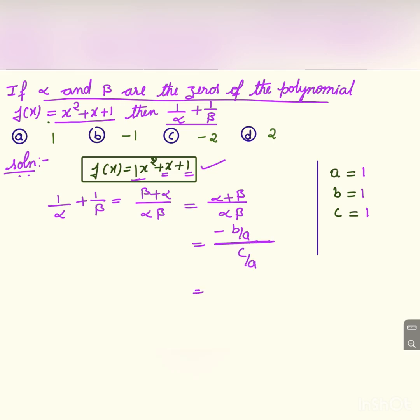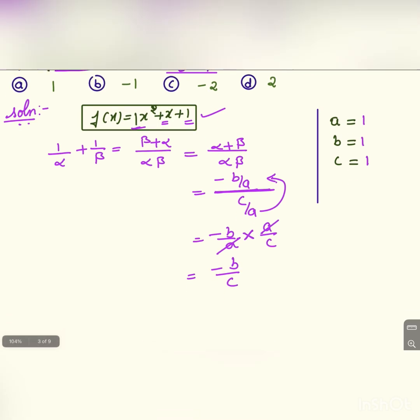Now this division is converted into multiplication. When we convert that, we get -b/a × a/c. This a will go to the numerator. Now a and a can be cancelled, and we are left with -b/c.